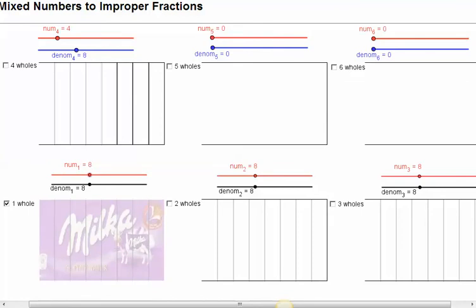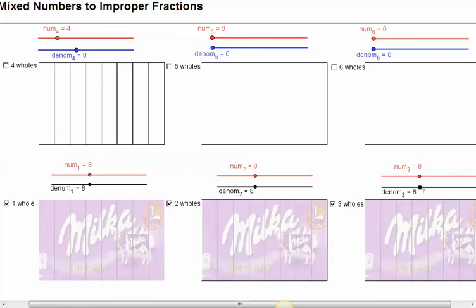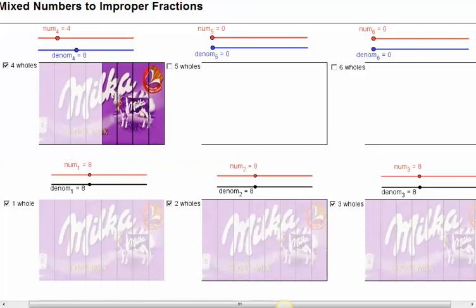Well there we go. So I'll need a second one. I've eaten the whole one, whole one, that makes 24 eighths. I can see that in the numerators. So there's only 4 eighths left, so I need a fourth one, but I only need 4 eighths of that. So I've got 3 whole Milka bars and 4 eighths is half, 3 and a half.